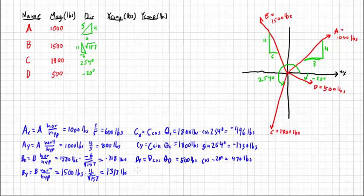And then DY. DY is negative 171.0 pounds.